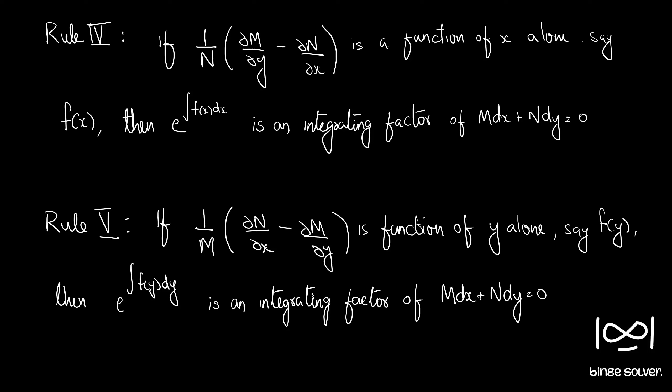In the last section, we were solving differential equations using the concept of exact equations. In cases where the differential equation is not exact, we discussed the concept of integrating factor, which we can use to convert the given differential equation into an exact equation. We also discussed various rules to find the integrating factor: Rule 1 was by inspection, Rule 2 was the special case where the differential equation is a homogeneous equation, and Rule 3 was a case where the differential equation was in the form f1(xy)·y dx + f2(xy)·x dy = 0.